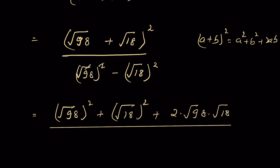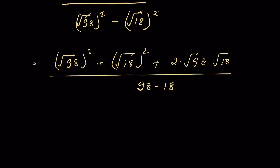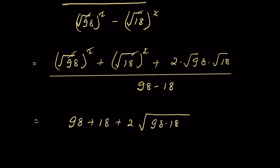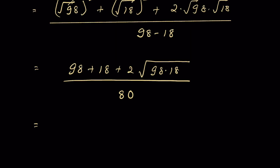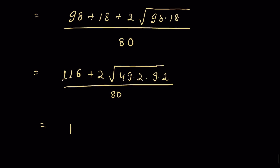Removing the square and square root in the denominator: 98 − 18 = 80. In the numerator: 98 + 18 = 116, and 2 × √(98 × 18). We write 98 as 49 × 2 and 18 as 9 × 2, so √(98 × 18) = √49 × √2 × √9 × √2 = 7 × 2 × 3 = 42. So 2 × 42 = 84.